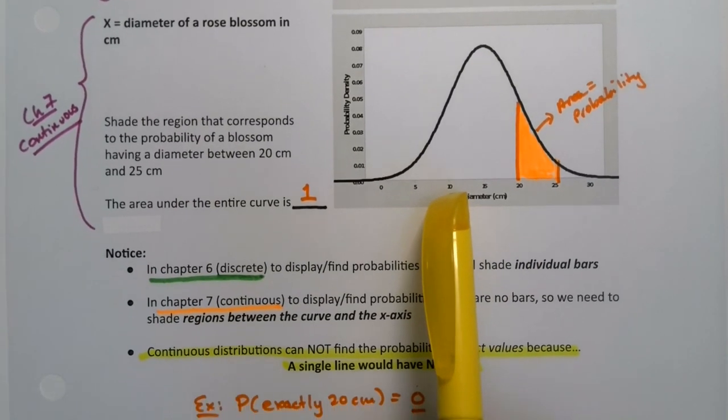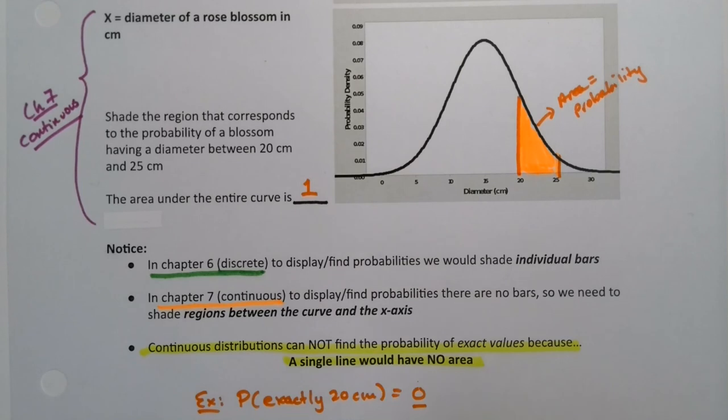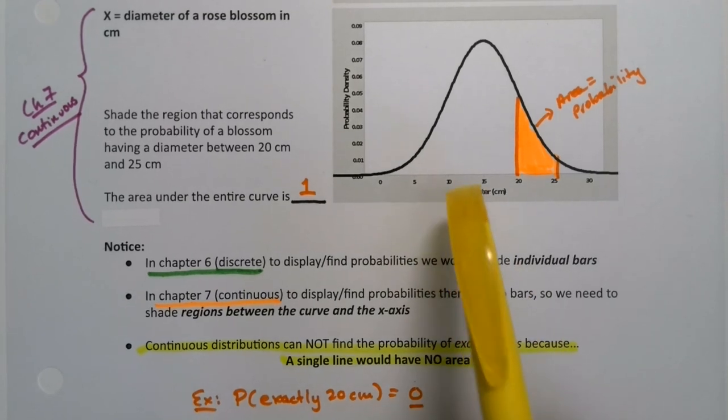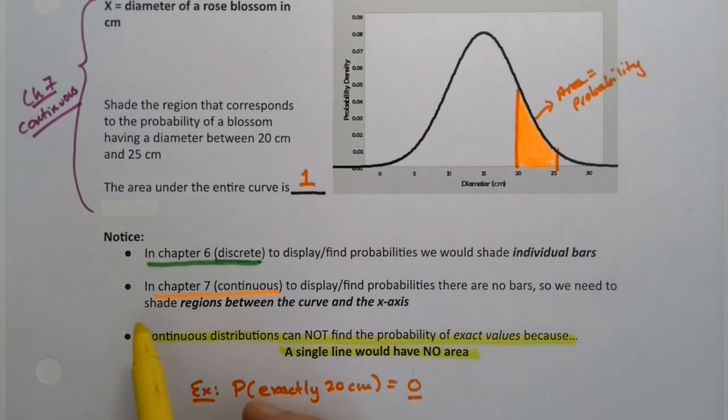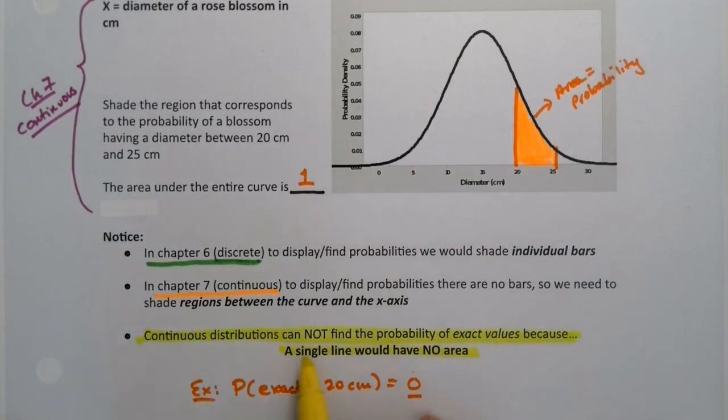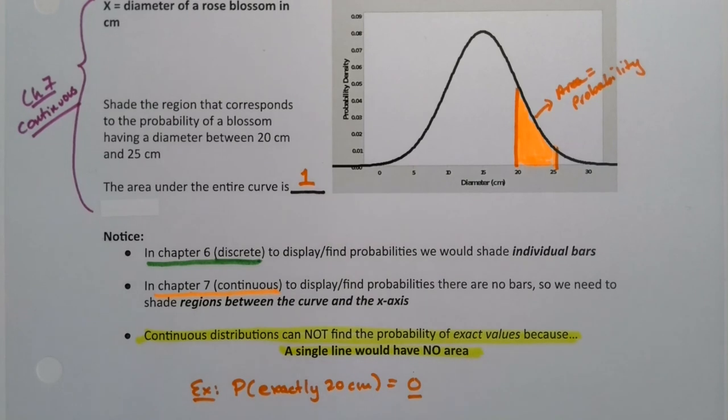But down here, you cannot find the probability of 10. It's not possible, it's zero. That's what it is, because no rose is exactly 10. Not exactly. It's 10 if you round it, but that's not what we're doing. It's 10.132. That's what it really is. That's an important thing to note, because that's quite a bit different from discrete probability distributions.